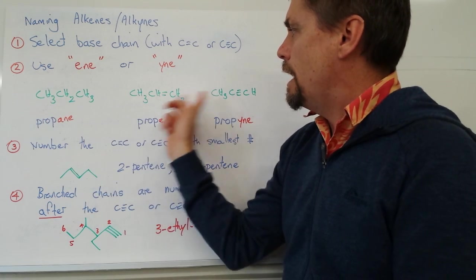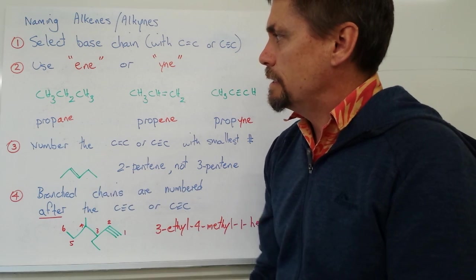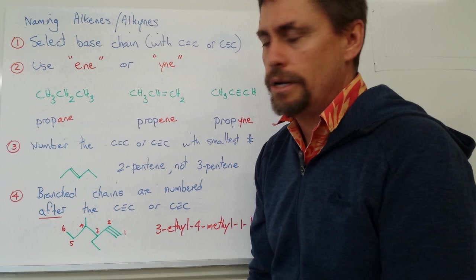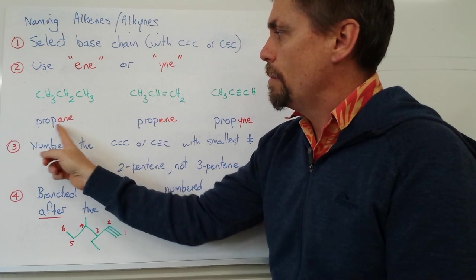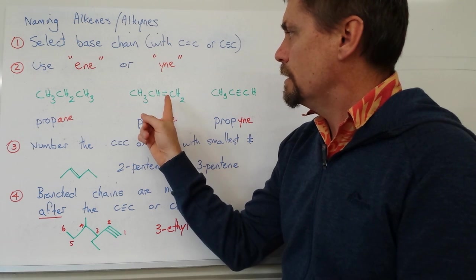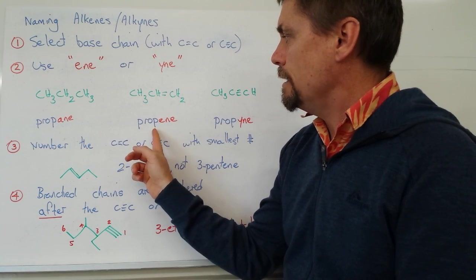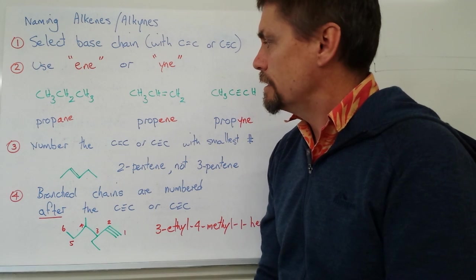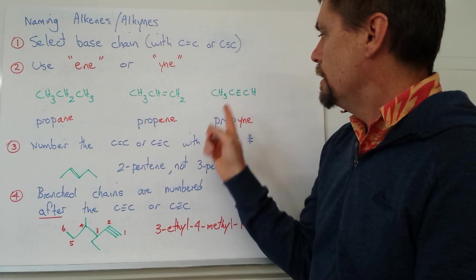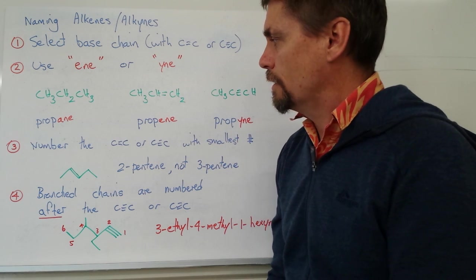Let's look at three molecules — they all have three carbons, so we use the prefix 'prop-'. The first is a completely saturated molecule with no double bonds, so it's propane. Our second molecule contains a double bond, so we use 'prop-' again and it's propene because it's an alkene. Our third molecule contains a triple bond, so it's propyne because it's an alkyne.